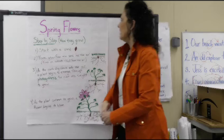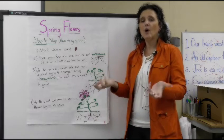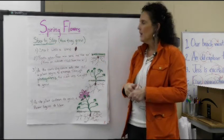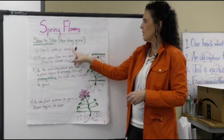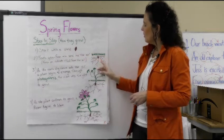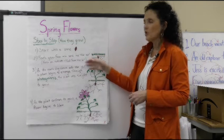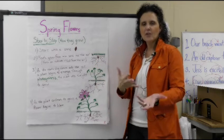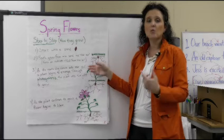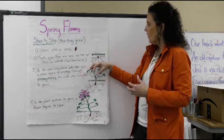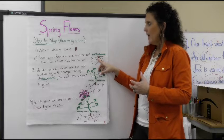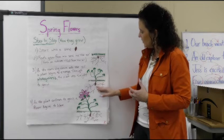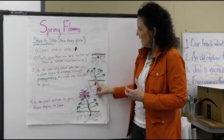We want to look at spring flowers, because that's an important part of spring. We know that spring is going to be here when we start to see the spring flowers. Let's look step by step how they would grow. They're going to start with a seed — this represents the seed. When we plant the seeds down in the dirt, the roots start to grow from the seeds into the soil.